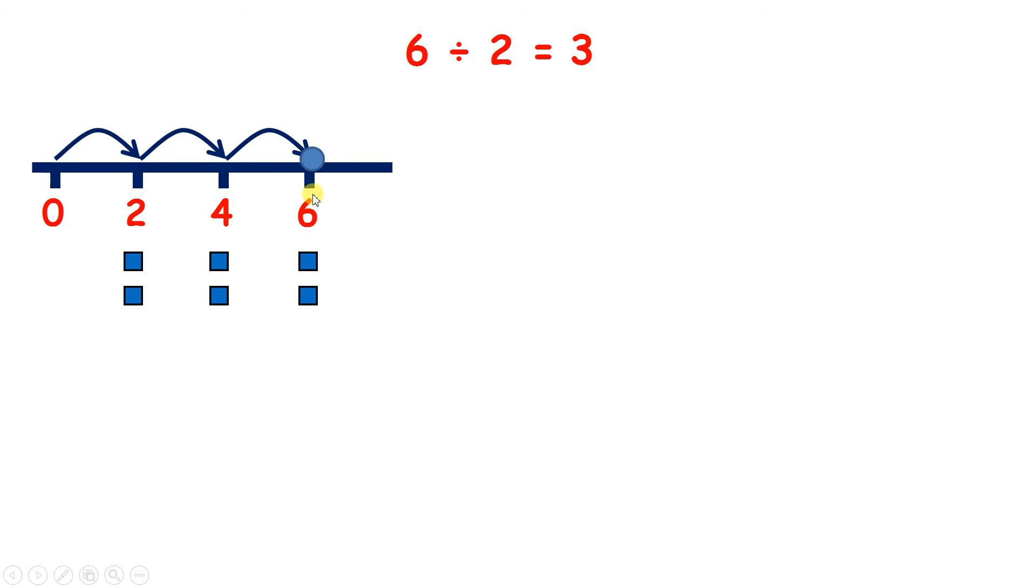Now we could have started at 6 and then taken away 2 each time until we got to 0, but it's easier to count forwards than backwards and we get the same answer either way.